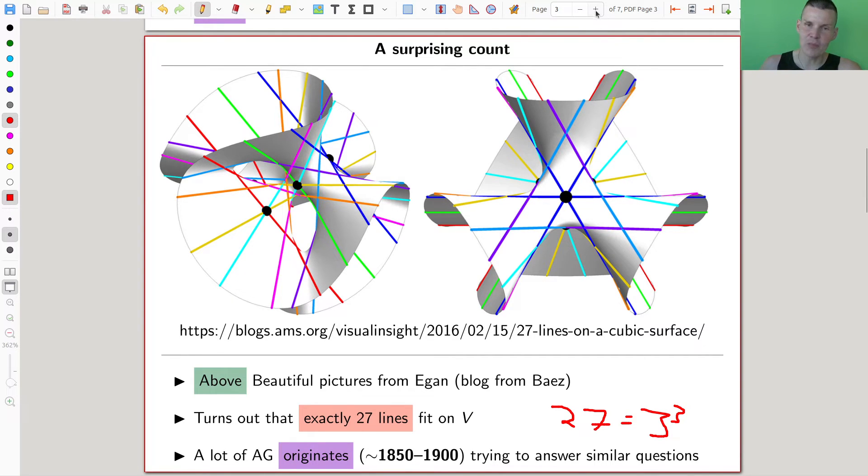In this case, more precisely, something we've seen, people essentially invented one of my favorite, one of the most important varieties that you will see, the Grassmannian, the k-planes in n-space for this purpose.